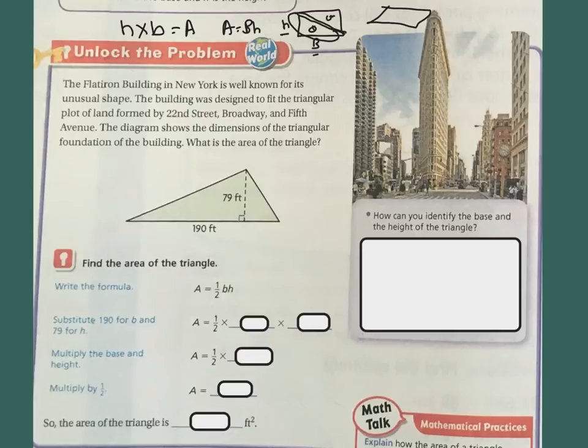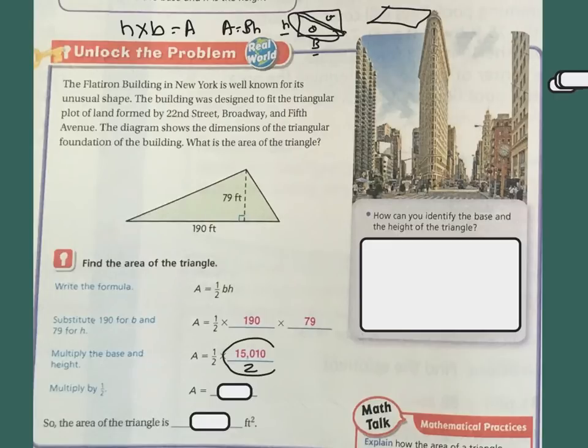So I'm going to substitute. I have 190 for my base, and my height is 79. So I'm going to multiply 190 times 79, and I'm going to get 15,010. Then I've got 1 half times that. So essentially, I put my 2 under here. It's really dividing because 1 times that is going to be that, and then 2 times 1 is going to be that. So I'm left with 15,010 over 2, and 15,010 divided by 2 is 7,505. So the area of the triangle is 7,505.